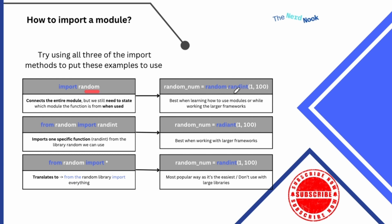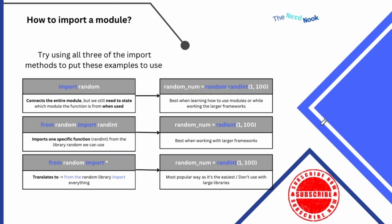For example, random has a function called randint. This just gives you a random integer between two numbers — a computer giving you a random number. If you import like this, you still have to say random.randint because randint is from the random library. This is great for when you're learning a new library or you're working with a really large module.